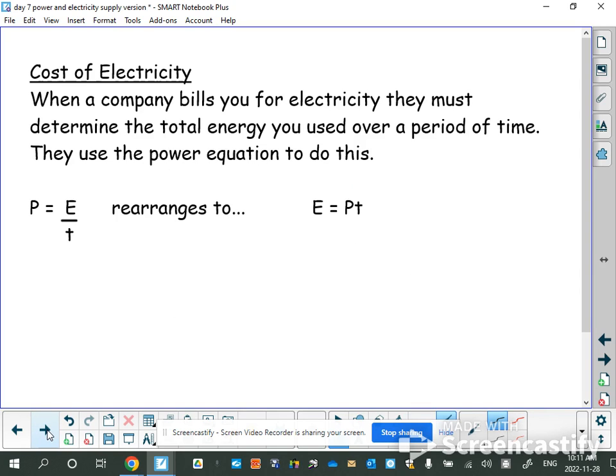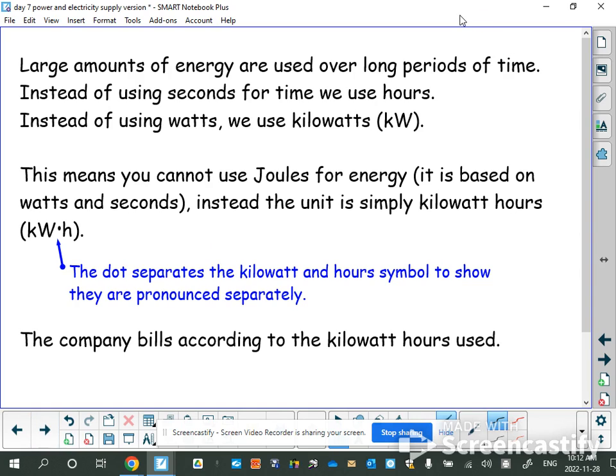We're going to use this to find the cost of electricity, which is super important. You're going to someday be paying an electrical bill, and understanding that bill is important. You'll understand your electrical use and maybe how to be more efficient. The electrical company cares about how much energy you use each month. They rearrange the power equation - power times time gives you the amount of energy used. They're going to make some adjustments though. You're talking about large amounts of energy over a whole month. They're not going to count in seconds - that's crazy. Instead they use hours because counting hours over a month is reasonable.